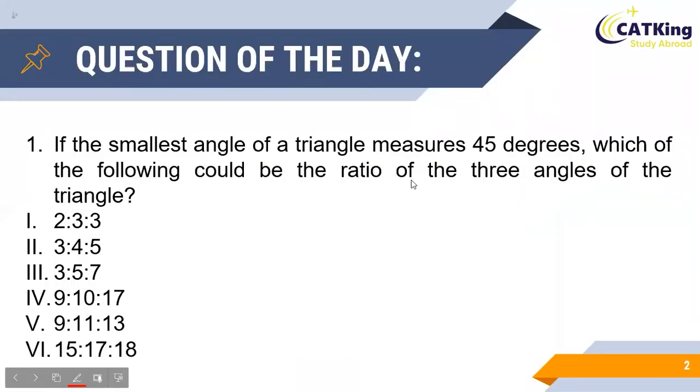As you can see, today's question is a multiple choice question with one or more than one correct answer. According to the question, the smallest angle in a triangle equals 45 degrees. What we need to do is calculate which of the six ratios given in the options could possibly be the ratio of the three angles in the given triangle.